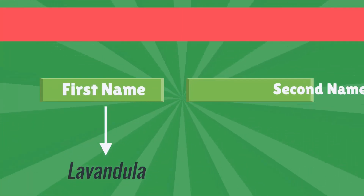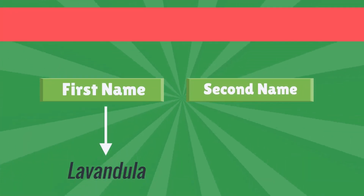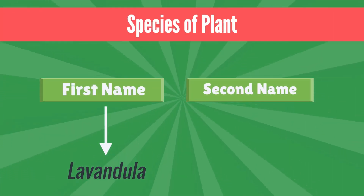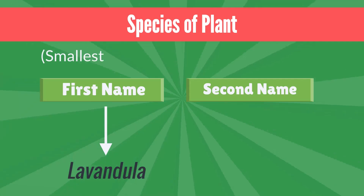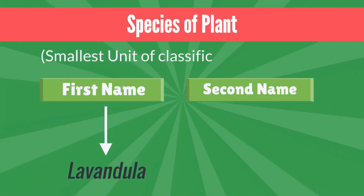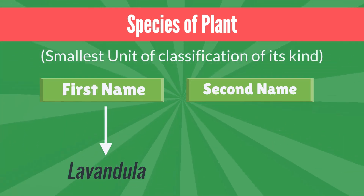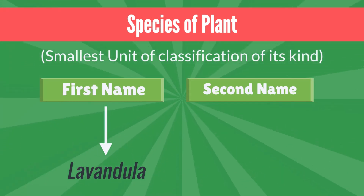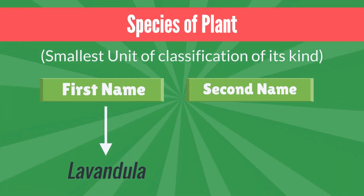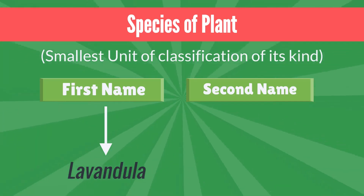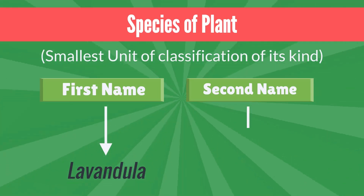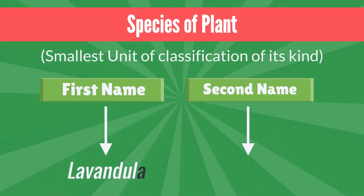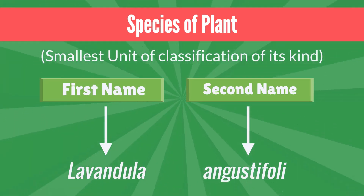The second part of its Latin binomial name indicates the species of the plant, being the smallest unit of classification of its kind and identifies which plant it is of that group. This part of the name is written in lowercase letters, such as Lavandula augustifolia.